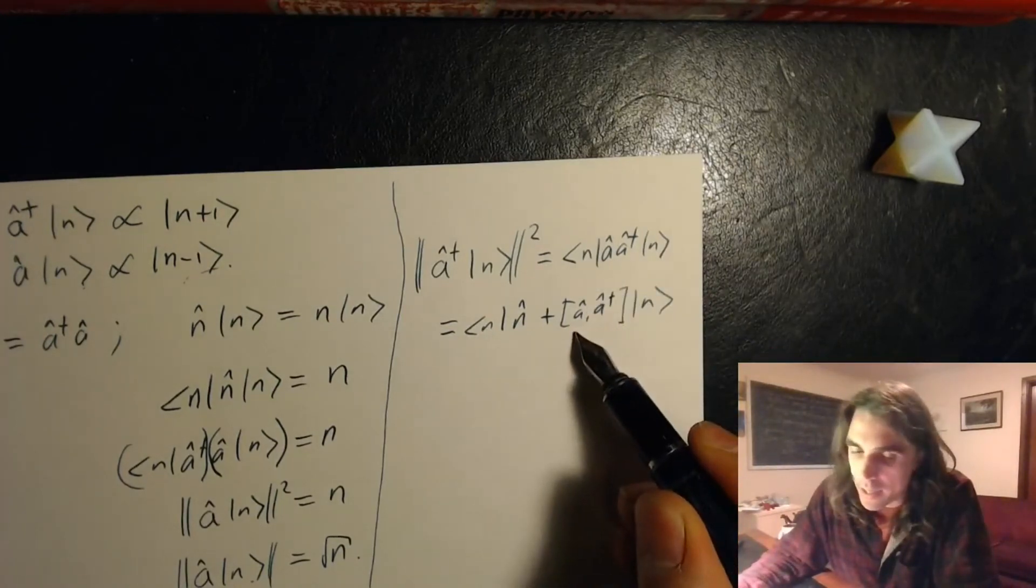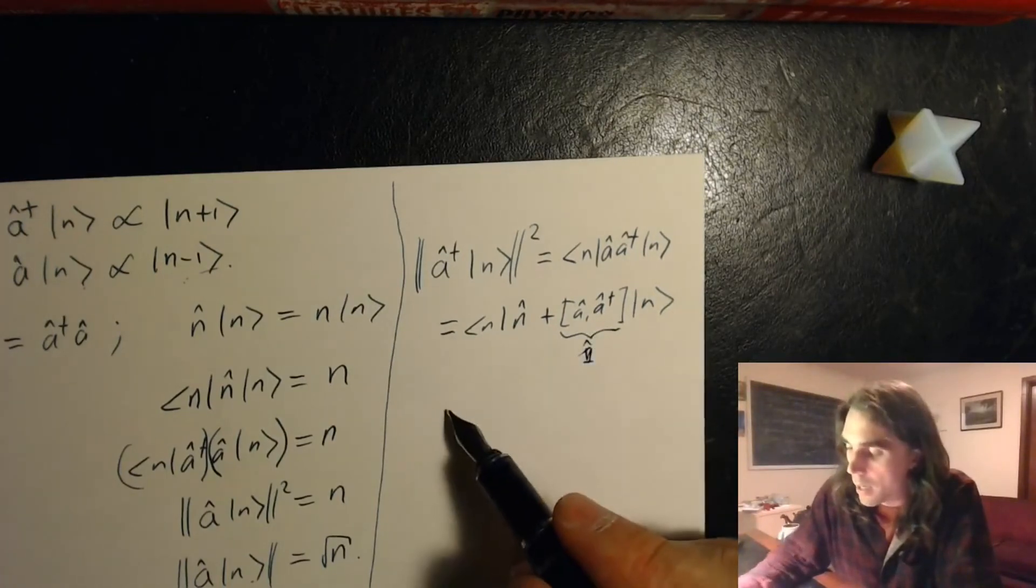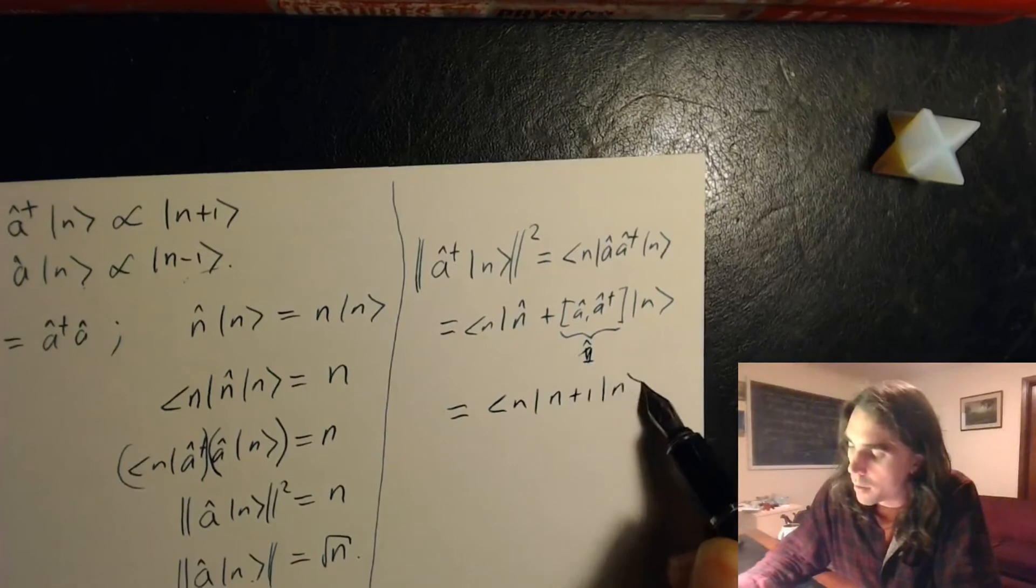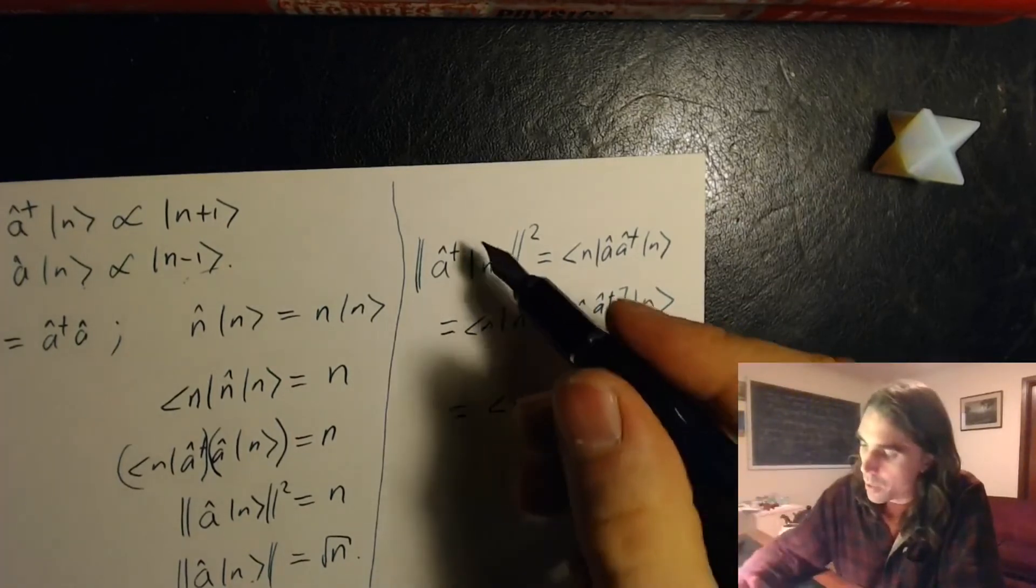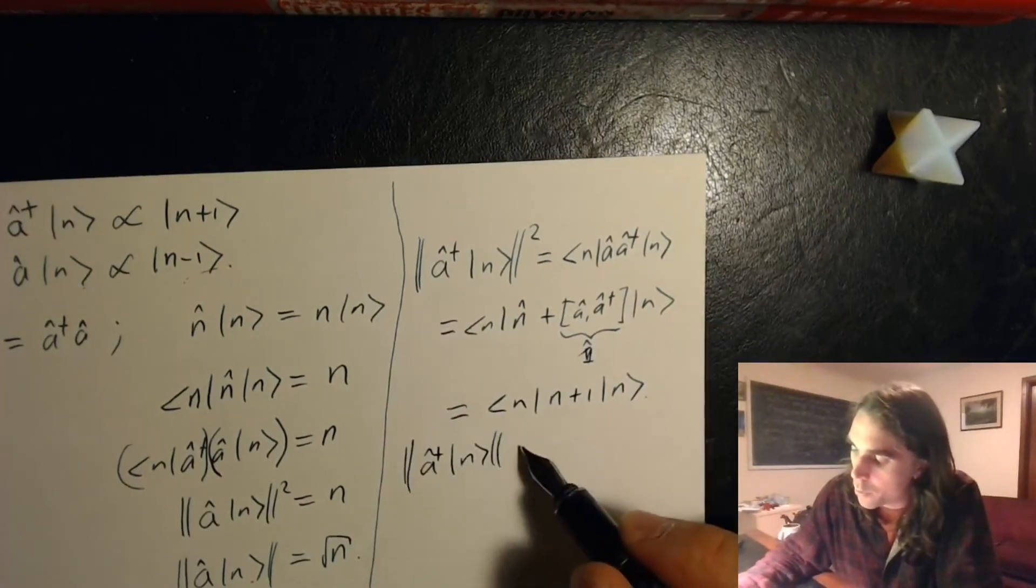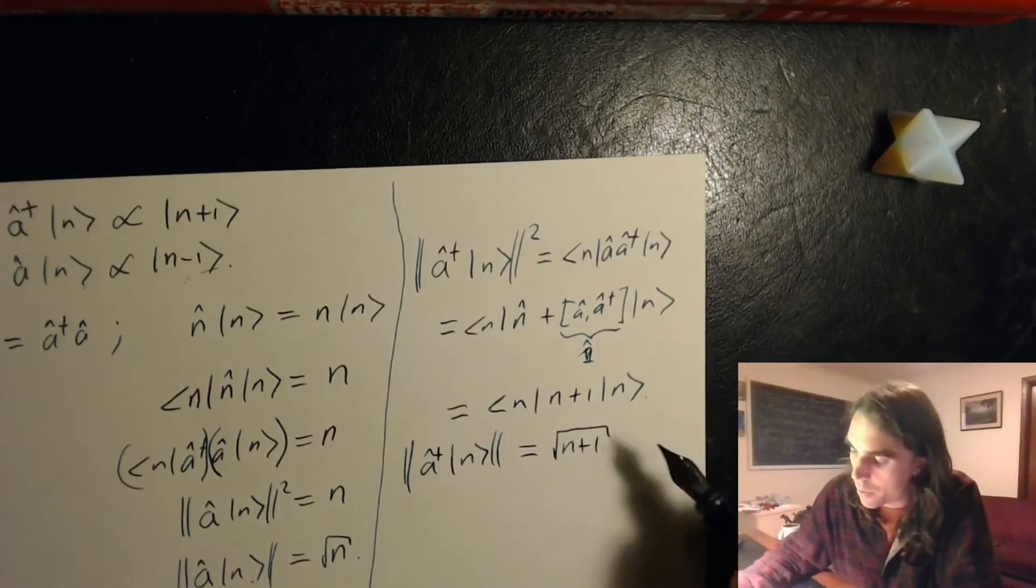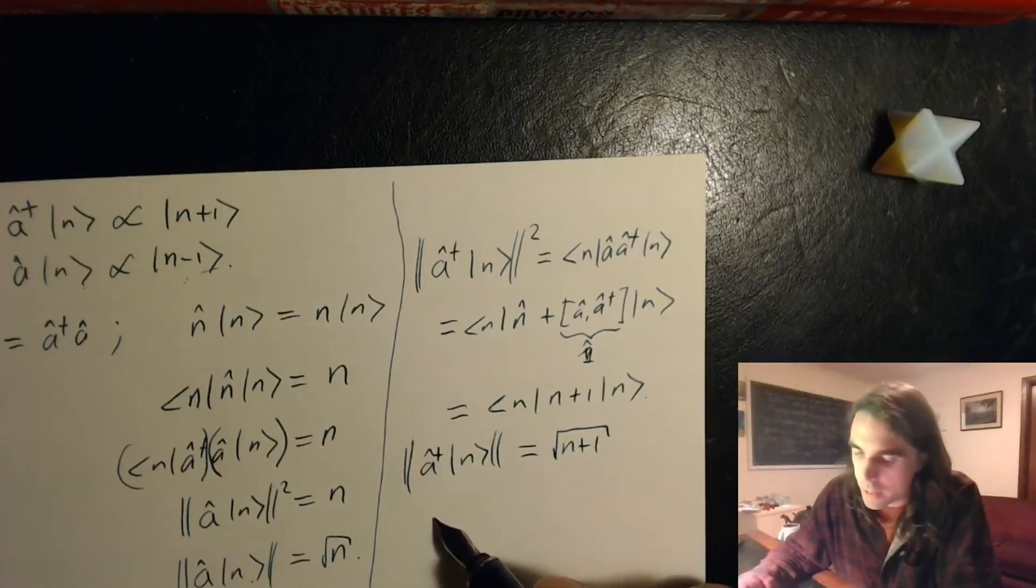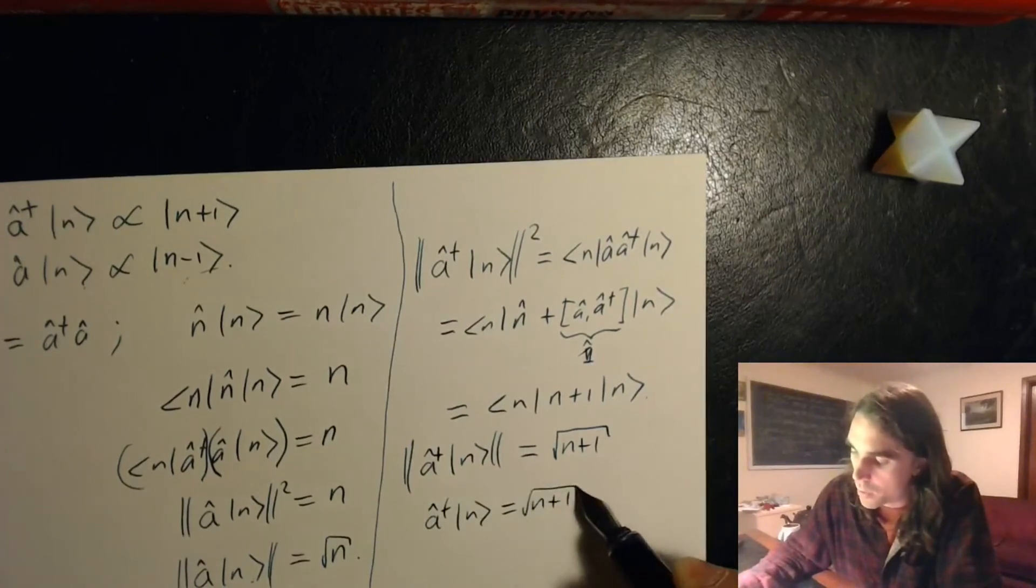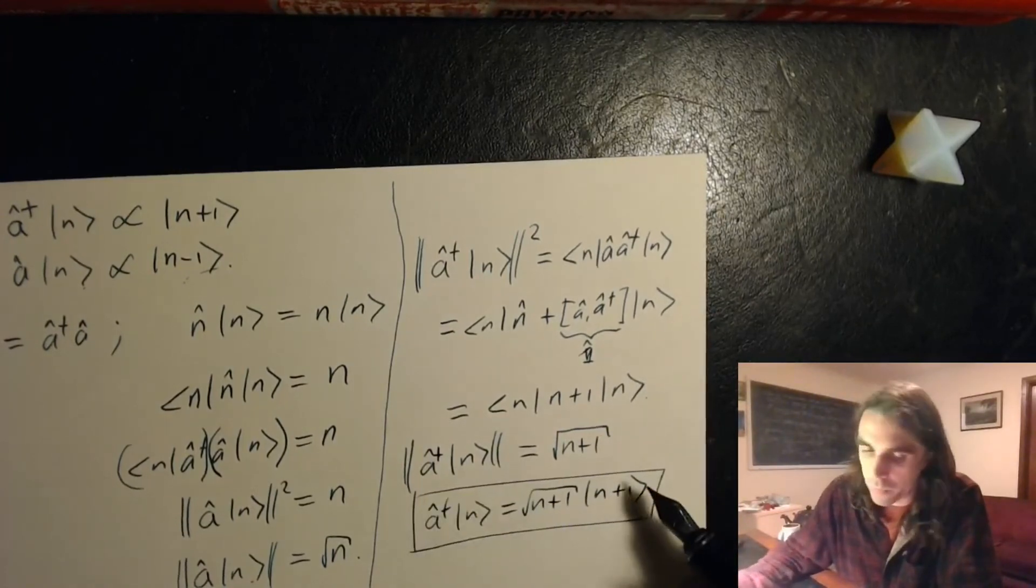But this thing here is just the identity operator, as we've seen on the board. And so acting on the state n, we see that we have n plus 1. So the length of the state a dagger acting on n, as given by the norm, is of length square root of n plus 1. And so just like before, we reasoned that a dagger n is equal to square root of n plus 1 times n plus 1, through the same reasoning.